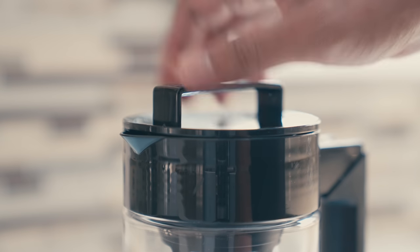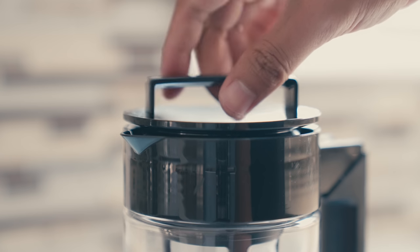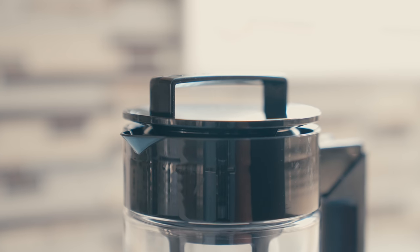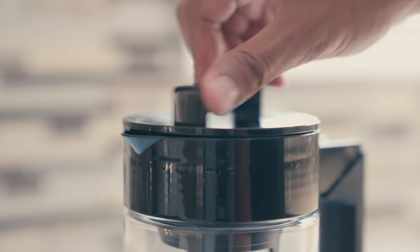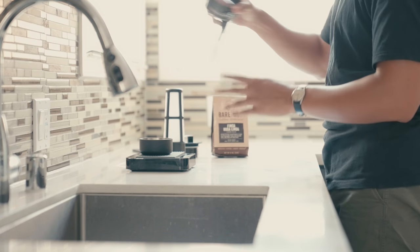The airtight lid keeps fridge odors from contaminating your brew, but opens conveniently with a half-turn when you're ready to dispense your coffee. Overall, these small convenience features make the brew process easier and more enjoyable.